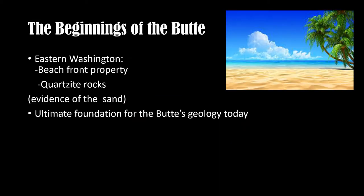The force ultimately created what we know now as Eastern Washington, turning places like Pullman into a beachfront. The quartzite rocks discovered all over Kamiak Butte were once sand, and are now something that makes up the main part of the butte geology today.